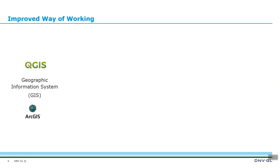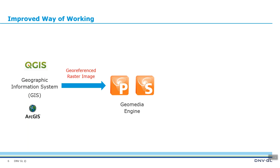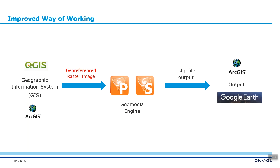In the improved way of working, we use a GIS application — in this case QGIS, which is an open source tool. We will set up a geo-referenced raster image which will be imported into FAST or SAFETTI. A shapefile output will be created, and then that can be displayed in a GIS package. In this case, we will export results to Google Earth.